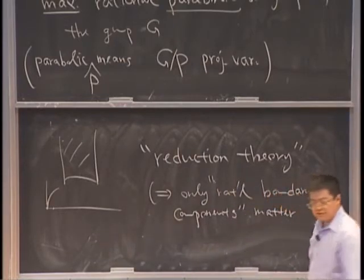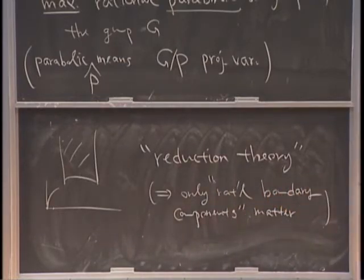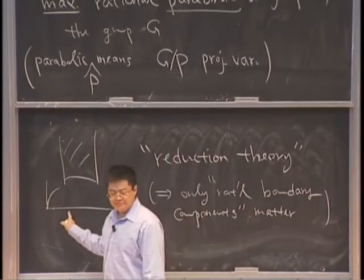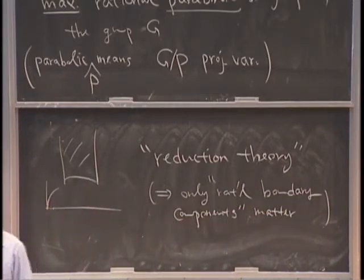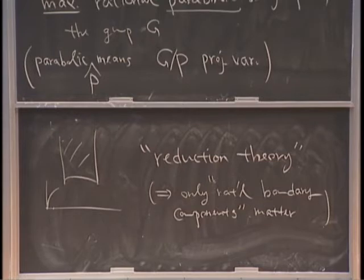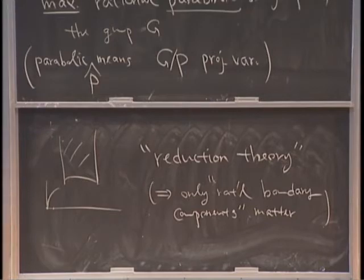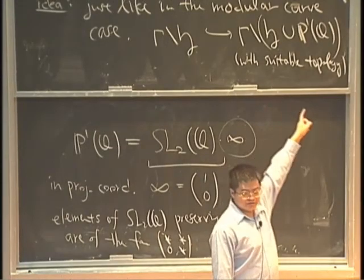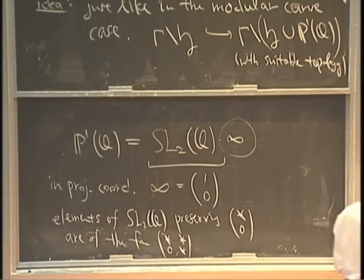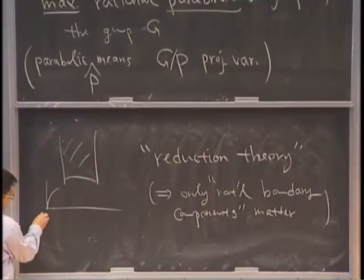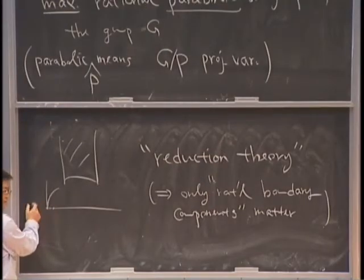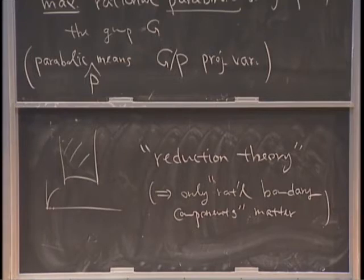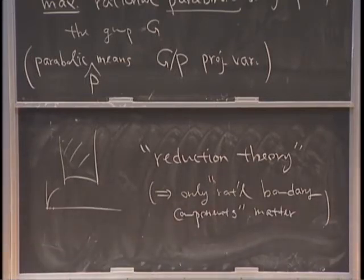You might wonder why rationality really matters. I cannot fully explain it, but the key word is 'reduction theory.' In the picture of fundamental domains, all you need to add are certain points. When you try to approach the boundary, you can only approach rational ones — you cannot really approach the irrational ones. This is the reason only the rational boundary components matter.